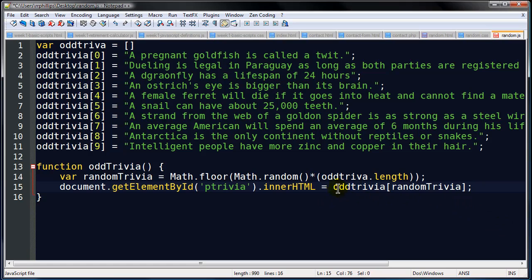So oddtrivia are the names of all of my array items. randomTrivia is some random number between 0 through 9. So when I combine these two, I'm going to sometimes get oddtrivia[3] or oddtrivia[8]. oddtrivia[3] of course corresponds to this statement: 'An ostrich's eye is bigger than its brain.' And oddtrivia[8] corresponds to 'Antarctica is the only continent without reptiles or snakes.' And I'll keep getting those random numbers and they're going to get inserted in between the opening and closing paragraph tags of an element with ID equals ptrivia on my document. So there we go.